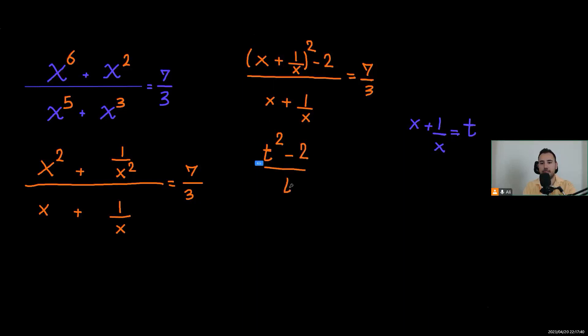t squared minus 2t equals 7 over 3. So we just need to solve this quadratic equation. It will be 3t squared minus 6 equals 7t. Having the 7t to the left hand side, we'll have 3t squared minus 7t minus 6 equals 0.